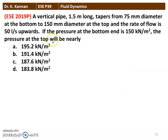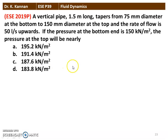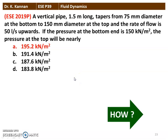The next question is from the 2019 question paper. A vertical pipe 1.5 meters long tapers from 75 millimeters diameter at the bottom to 150 millimeters diameter at the top. The rate of flow is 50 liters per second upwards. If the pressure at the bottom end is 150 kilonewtons per meter square, the pressure at the top is 195.2 kilonewtons per meter square.